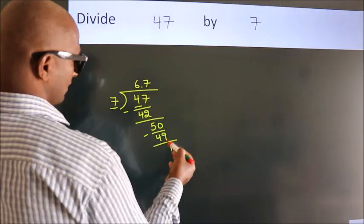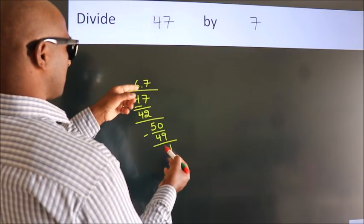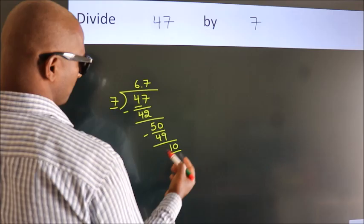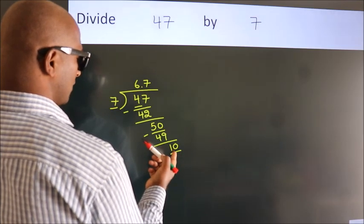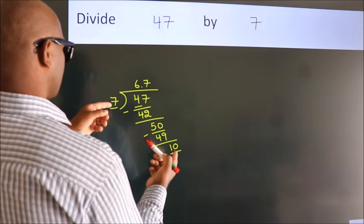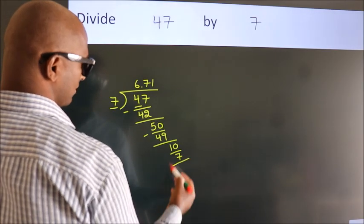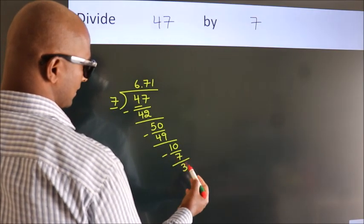After this, we already have the decimal, so directly take 0. So 10. A number close to 10 in the 7 table is 7 times 1, which is 7. Now we subtract. We get 3.